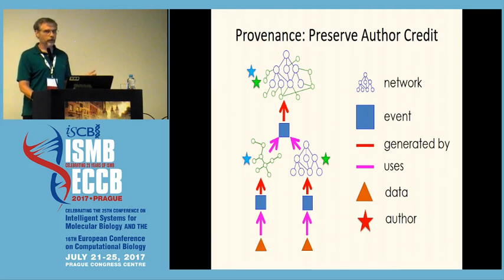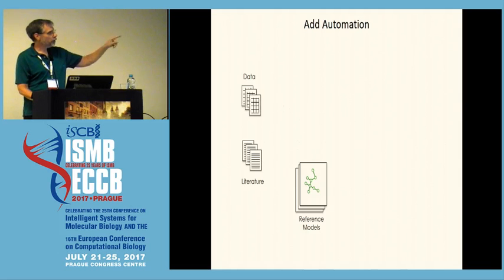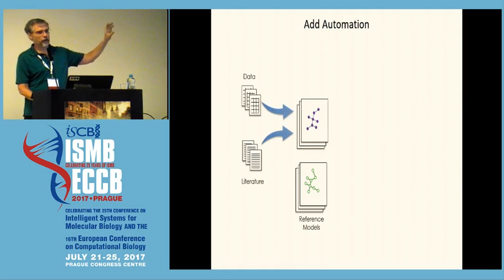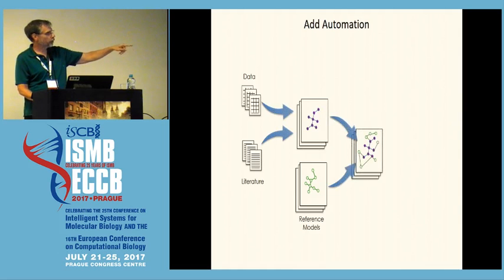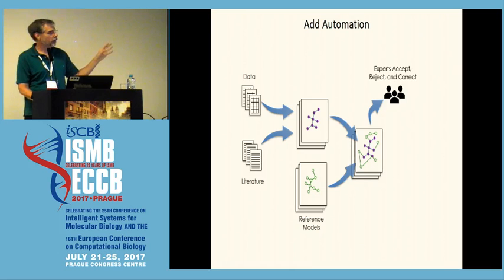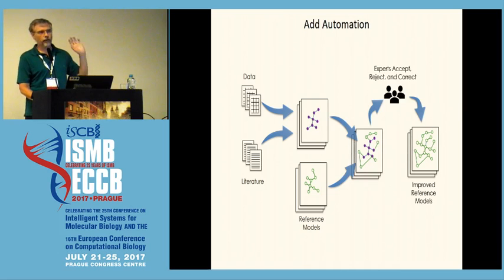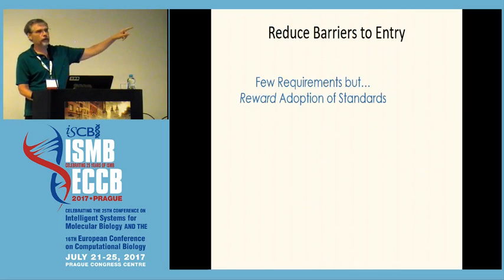We preserve author credit in a tree-structured history of provenance, so in derivative works there's a trail — as long as you don't delete it. We're also working on a pipeline combining NLP and data-driven additions to networks, merged with reference networks to create augmented networks. These are passed to experts who review, accept, correct, or reject edits. We get an improved reference network and the cycle repeats.